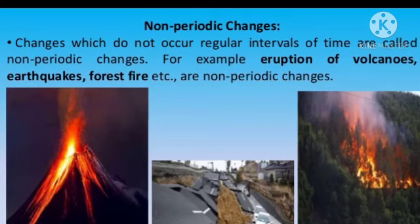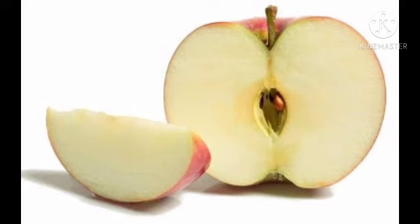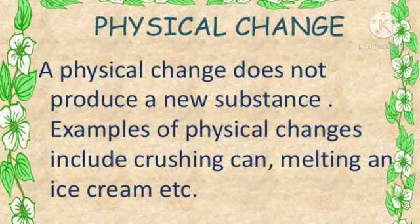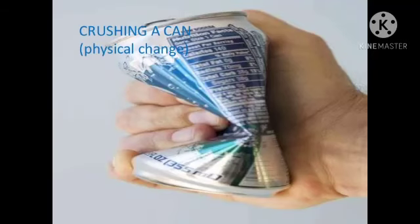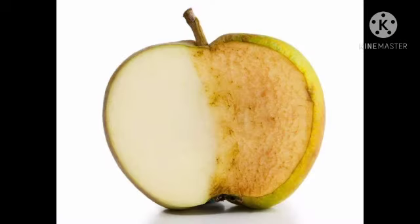Physical and chemical changes — let's do a small activity. Take an apple and cut it into two halves. Cut one half into pieces and share it with your friends. Is there any change in the composition of the apple while cutting? No — only the shape and size have changed. This is called a physical change. A physical change does not produce a new substance; for example, crushing a can or melting of ice. Leave the other half on the table for some time. You will see brown patches formed on the cut surface, because of a reaction between substances in the apple and the air around it. This is a chemical change.